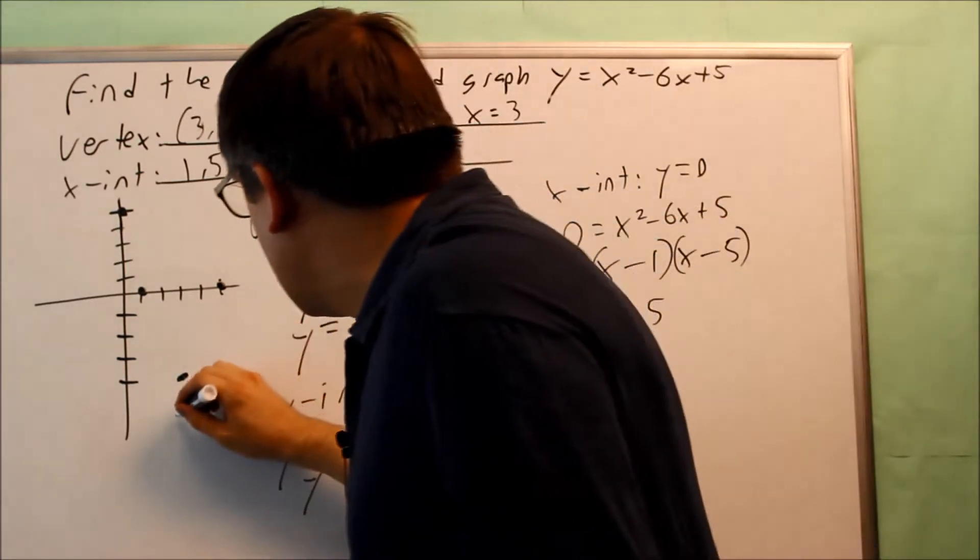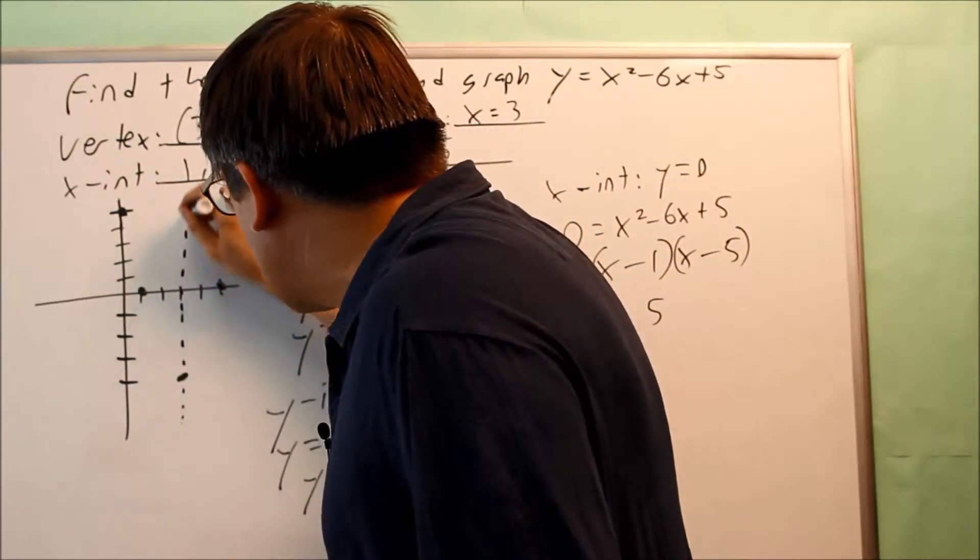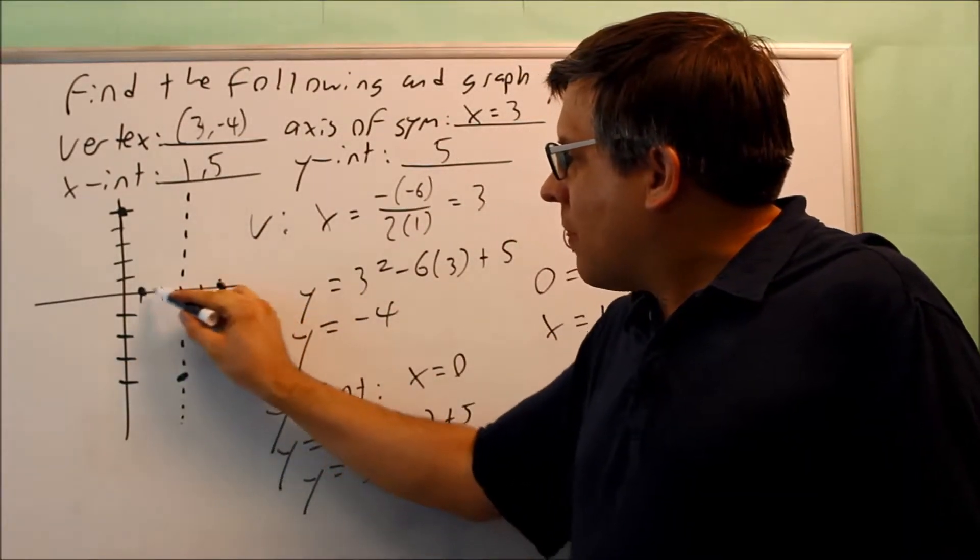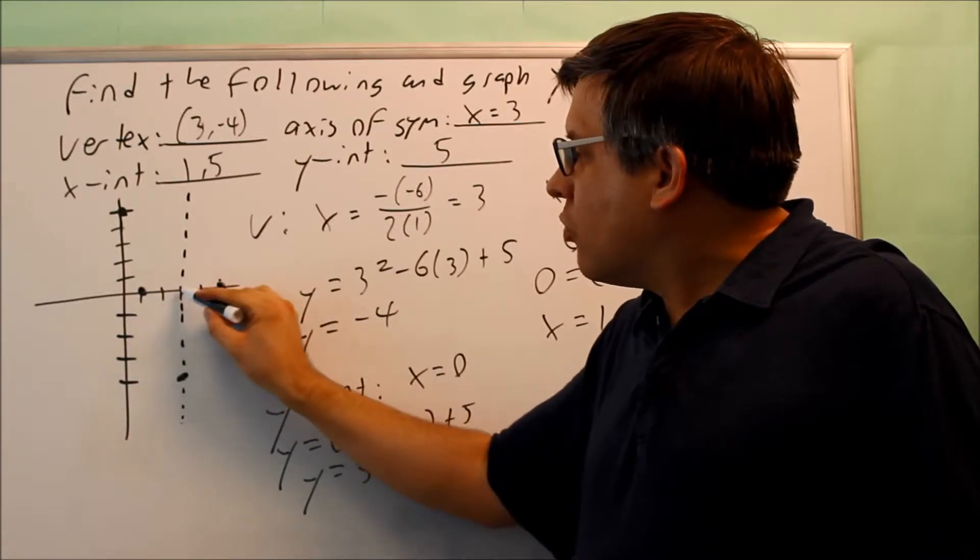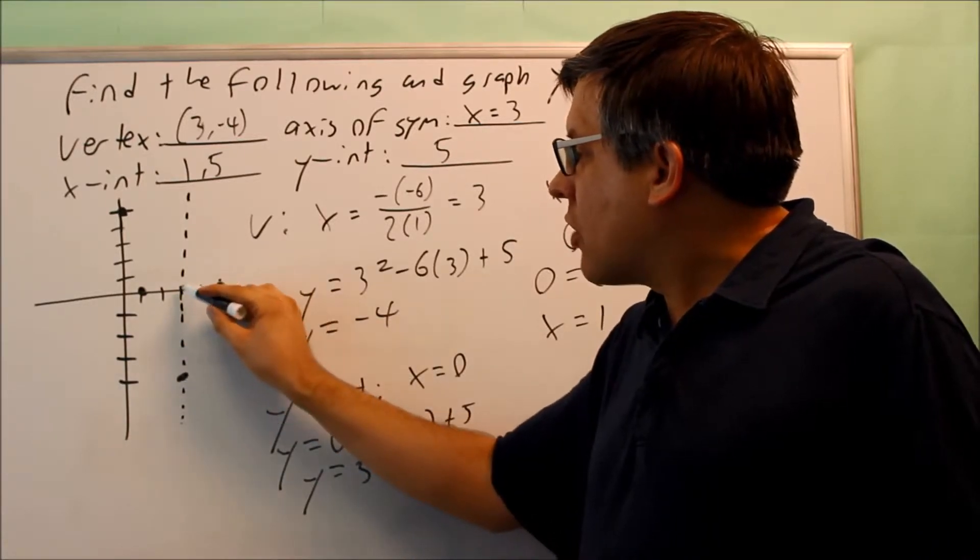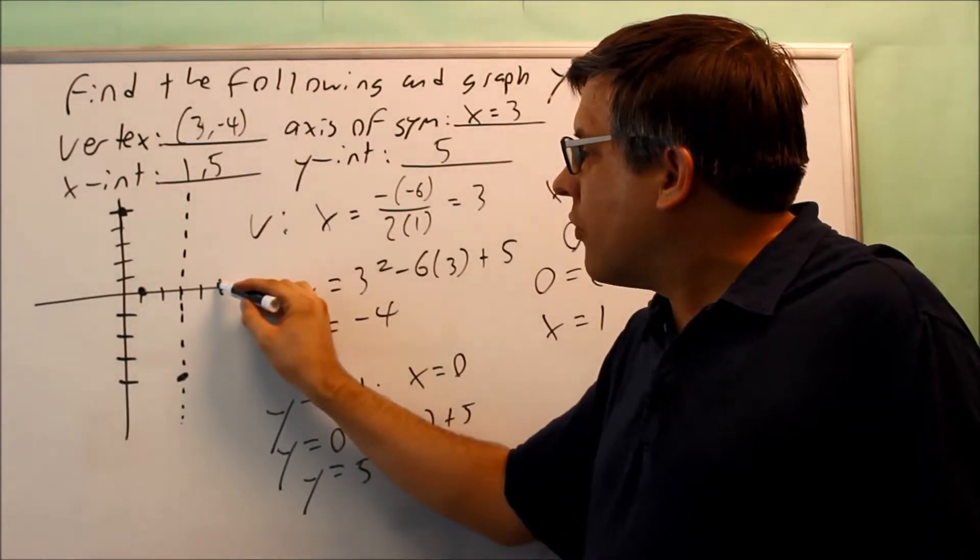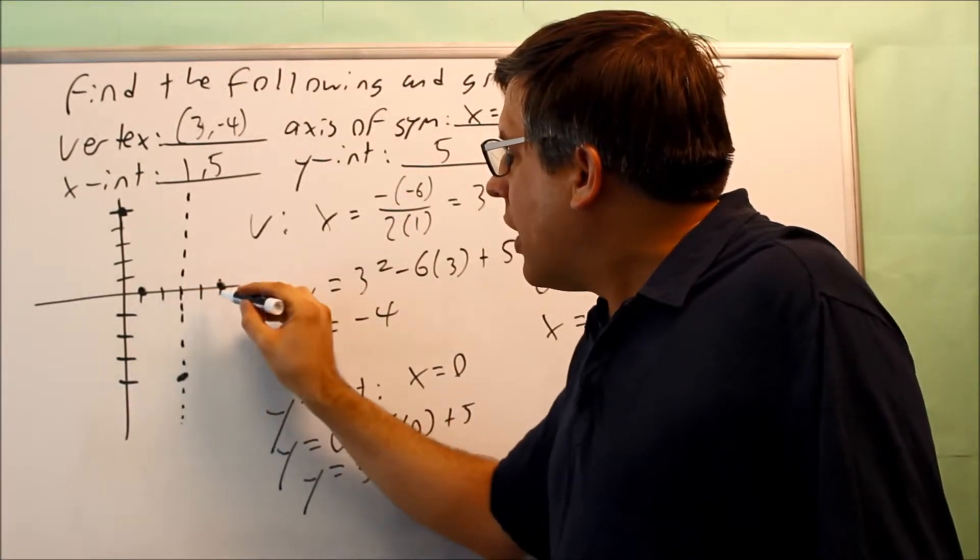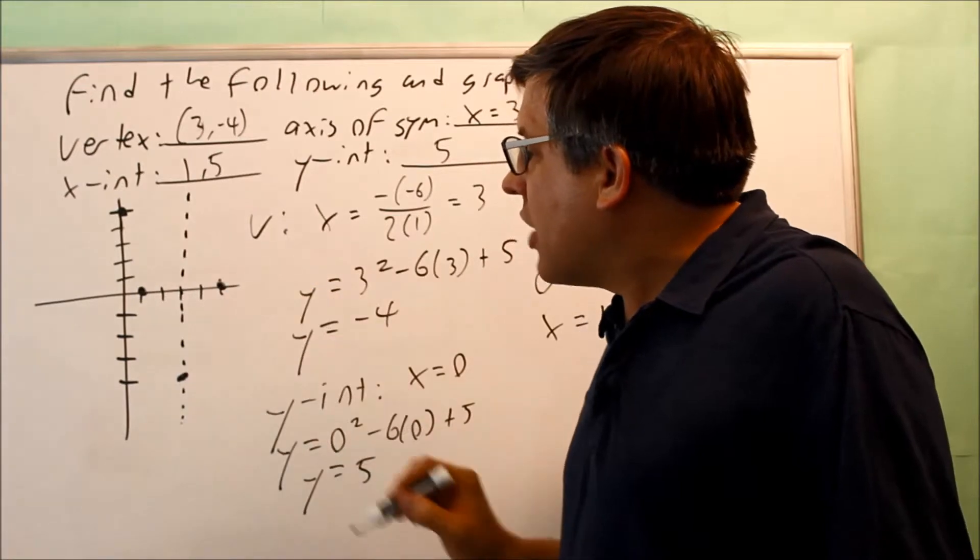That's our fold line, and what we notice about that is that you see that this x-intercept is exactly 2 away from that dotted line, and this one is also exactly a distance of 2 away from the dotted line. So you're always going to notice that you have the equal distance away on both sides of that dotted line.